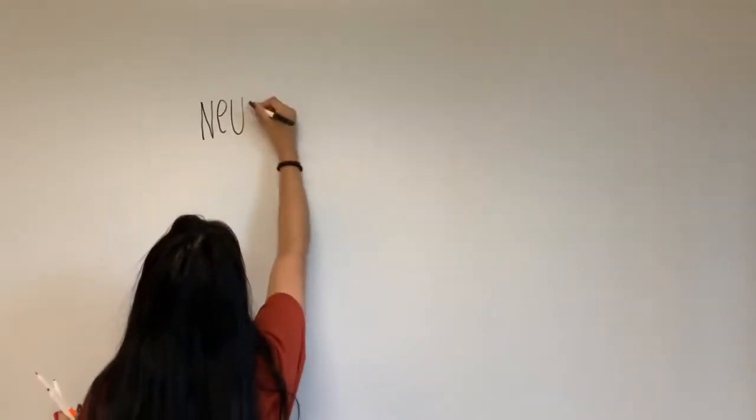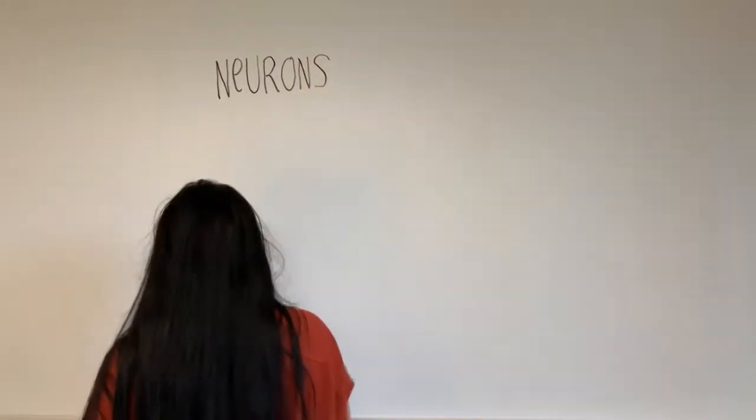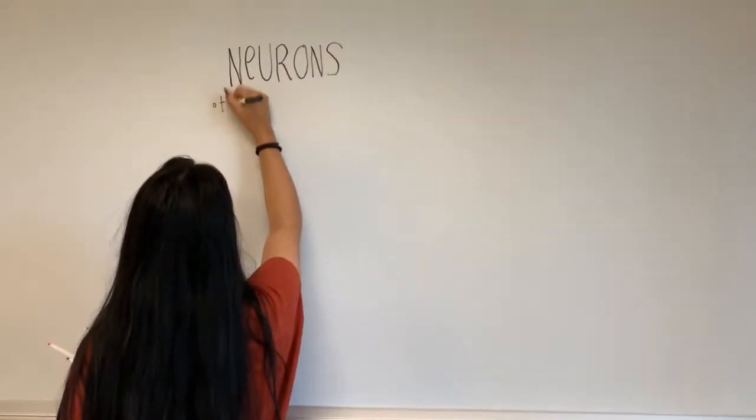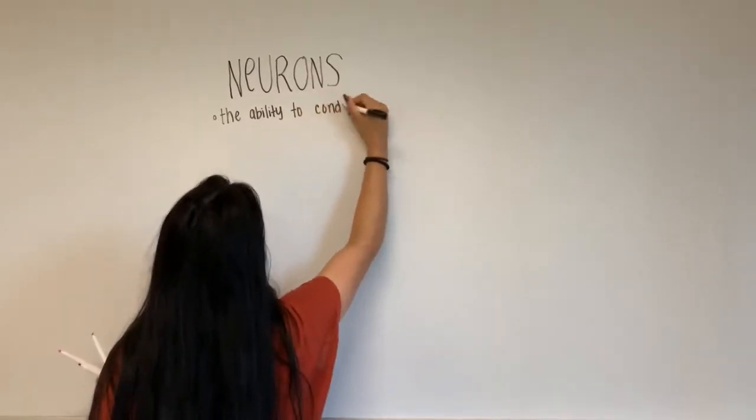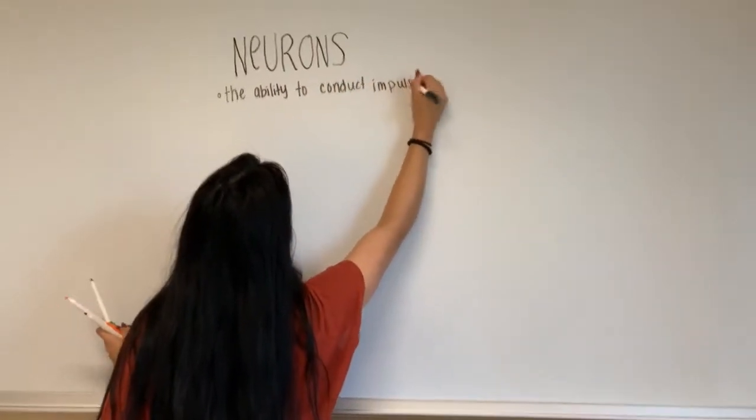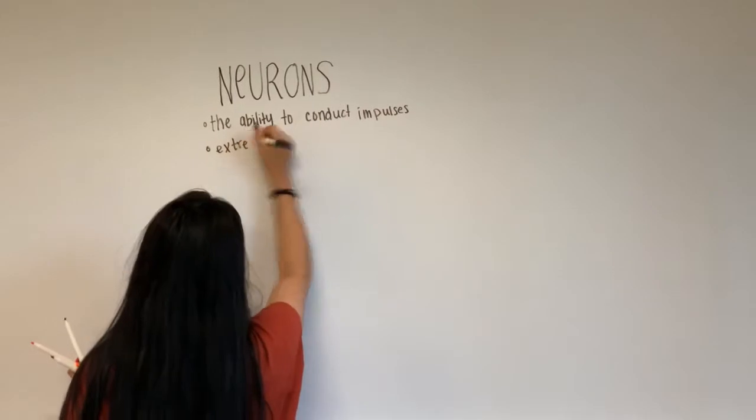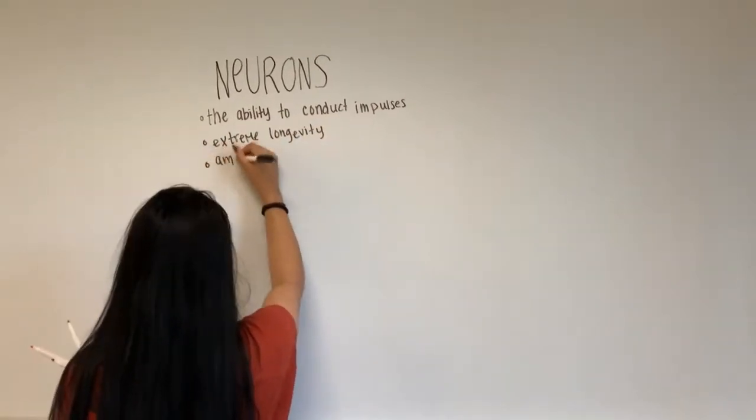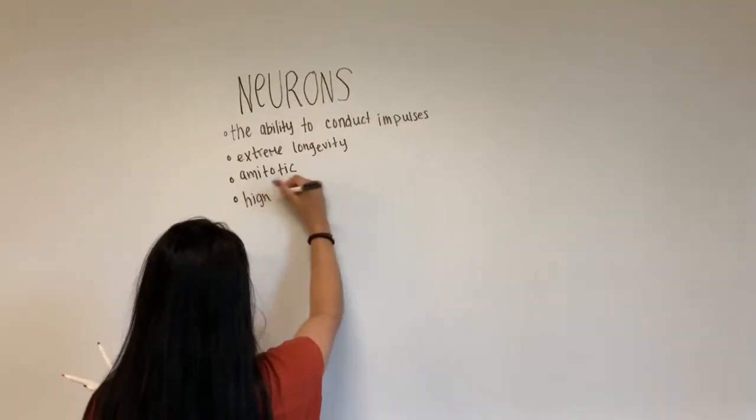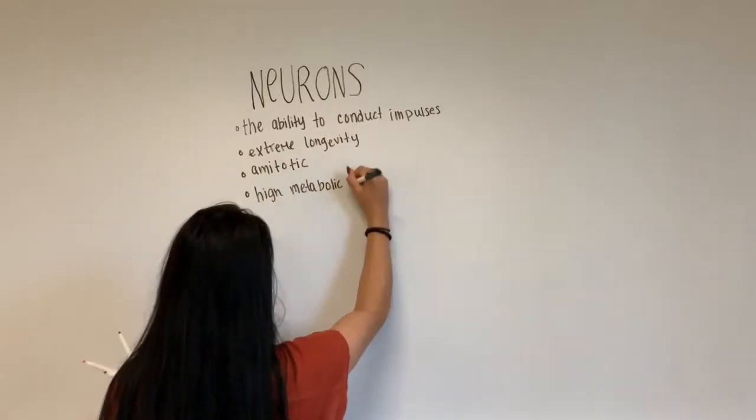Neurons are nerve cells. They are parts of the nervous system and billions of these form messages as nerve impulses which go from one part of the body to another. The neurons functional characteristics is that they have the ability to conduct impulses, they have extreme longevity or lifetime, they are mitotic and they do not divide, and they have a high metabolic rate which they need oxygen and glucose.